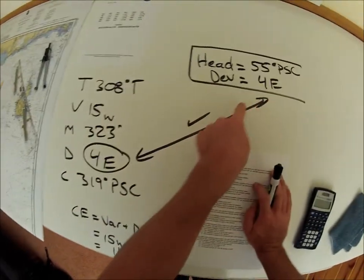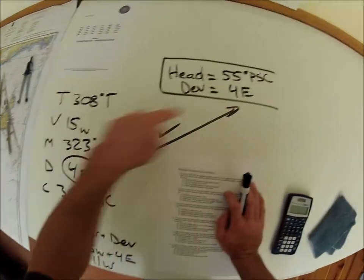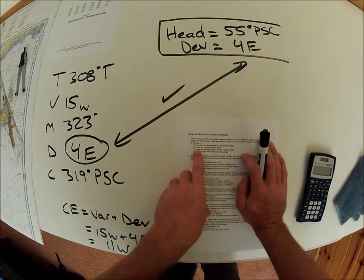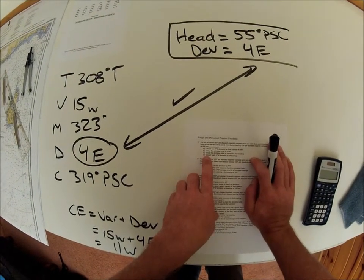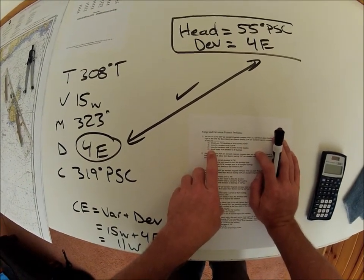The deviation table is correct for that heading. Yes. This is what we got. 4 east here. We checked it. 4 east here. So C is the correct answer, but I'm going to explain why answer D is incorrect.